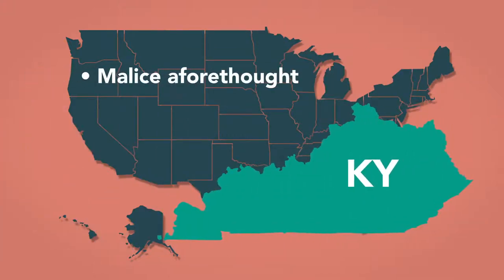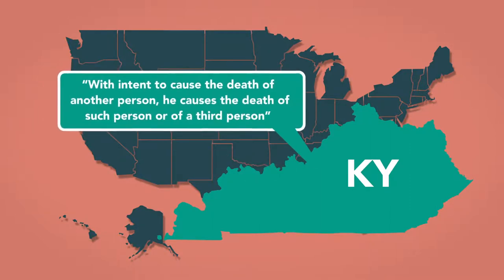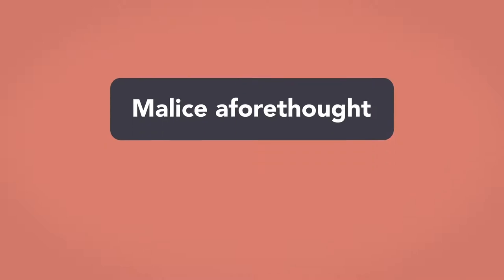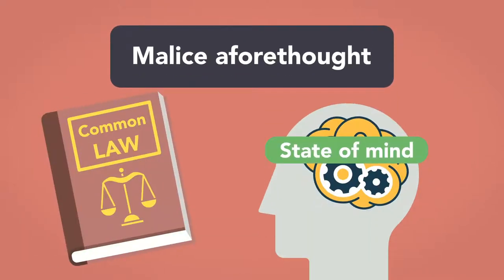Kentucky, by contrast, leaves out the term malice aforethought and states that a person is guilty of murder when, with intent to cause the death of another person, he causes the death of such person or of a third person. Malice aforethought was, under the common law, the state of mind required for a murder conviction, though not every state retains this language.